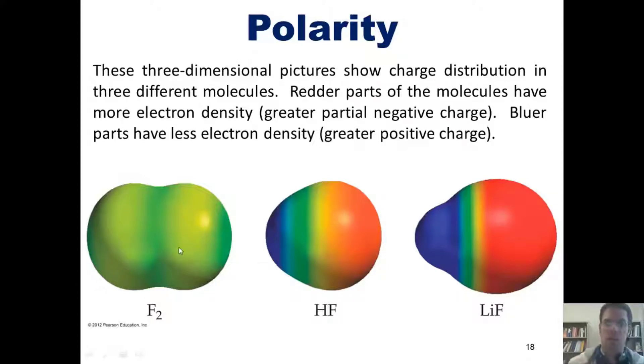You'll notice that in the molecule F2, where both of the atoms, fluorines, are equally electronegative, there's a completely even sharing of electron density.